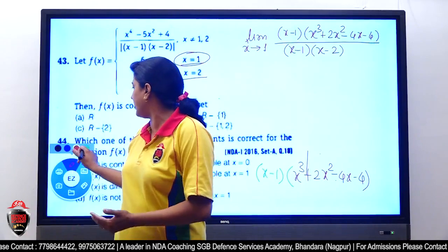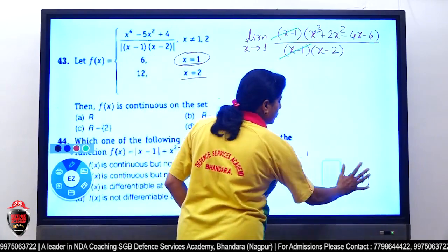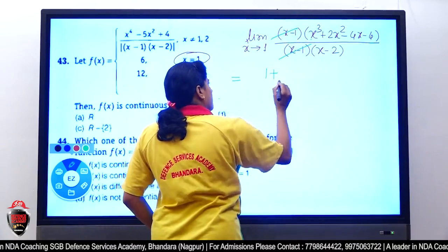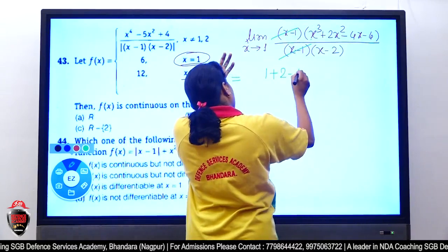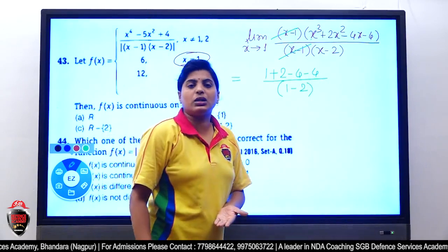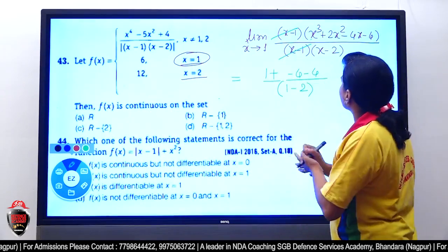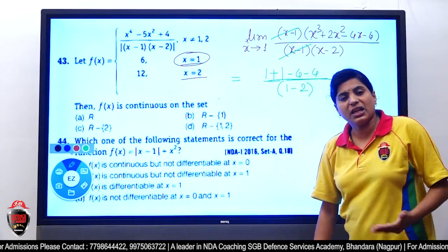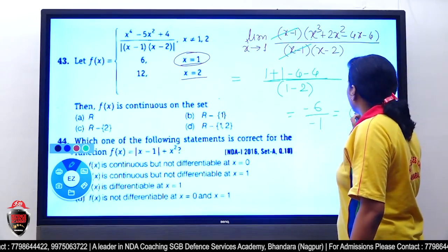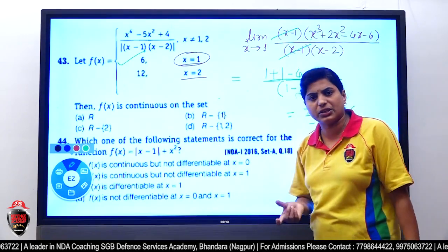Substituting x = 1: numerator gives 1³ + 2(1)² − 4(1) − 4 = 1 + 2 − 4 − 4 = −5, and denominator gives 1 − 2 = −1. Total: 1 + 2 − 4 − 4 = −5 upon −1, giving the value 6. The function is continuous at x = 1.